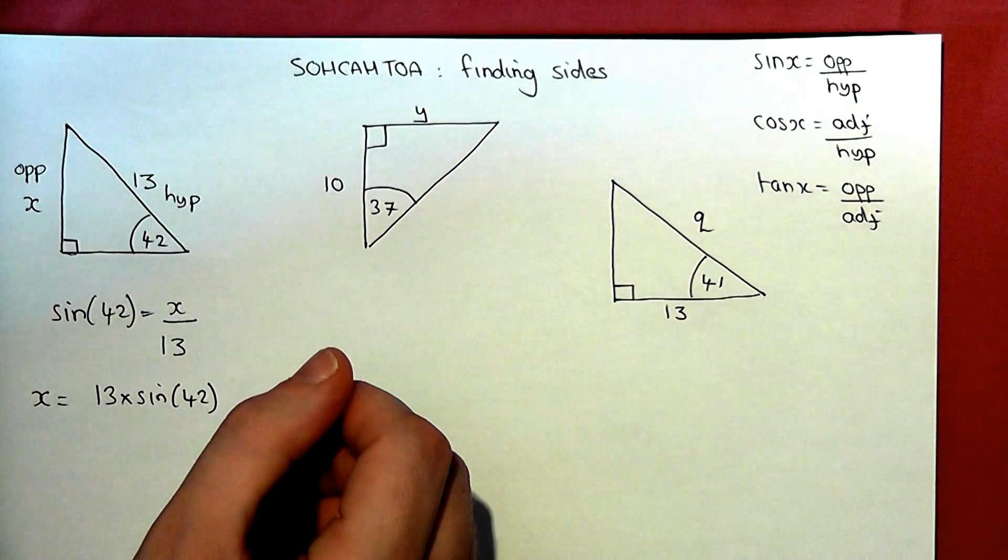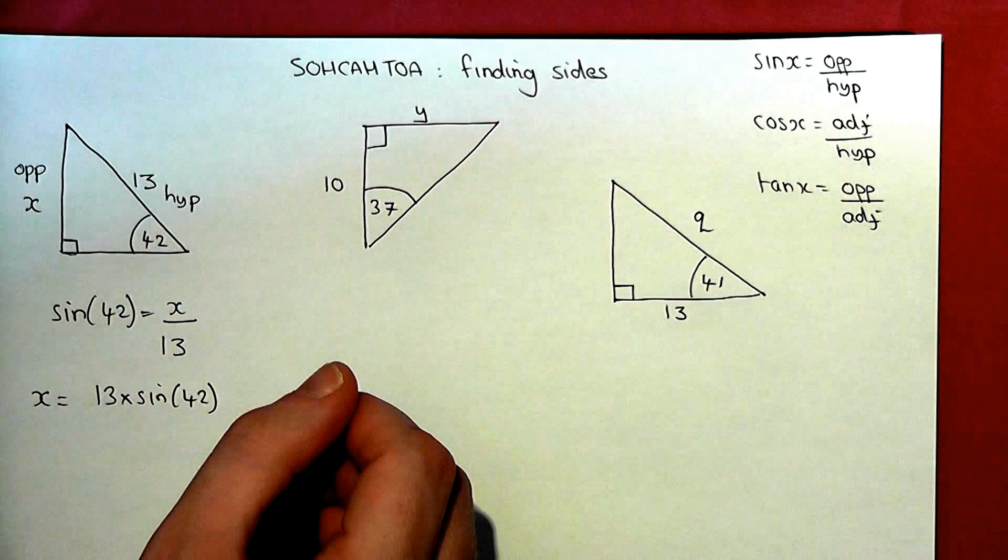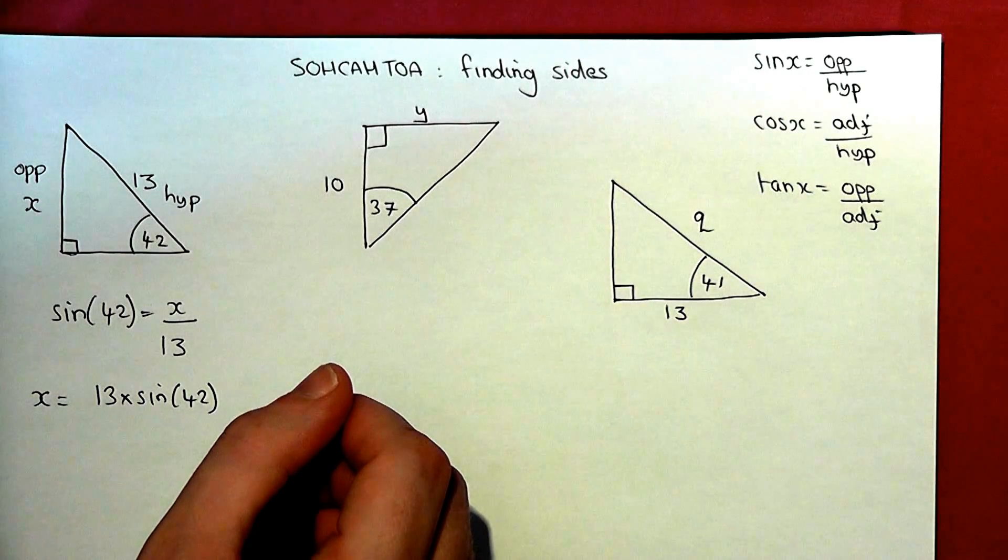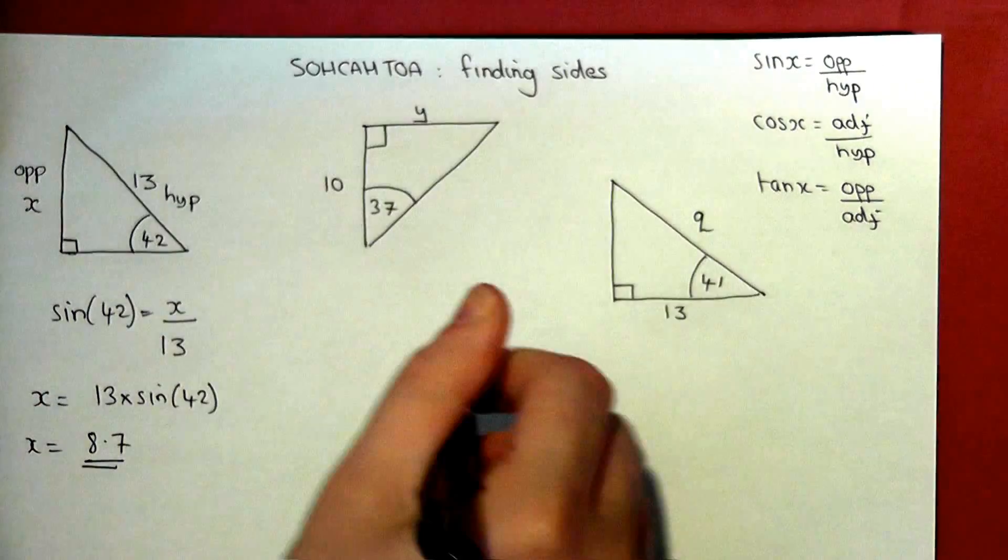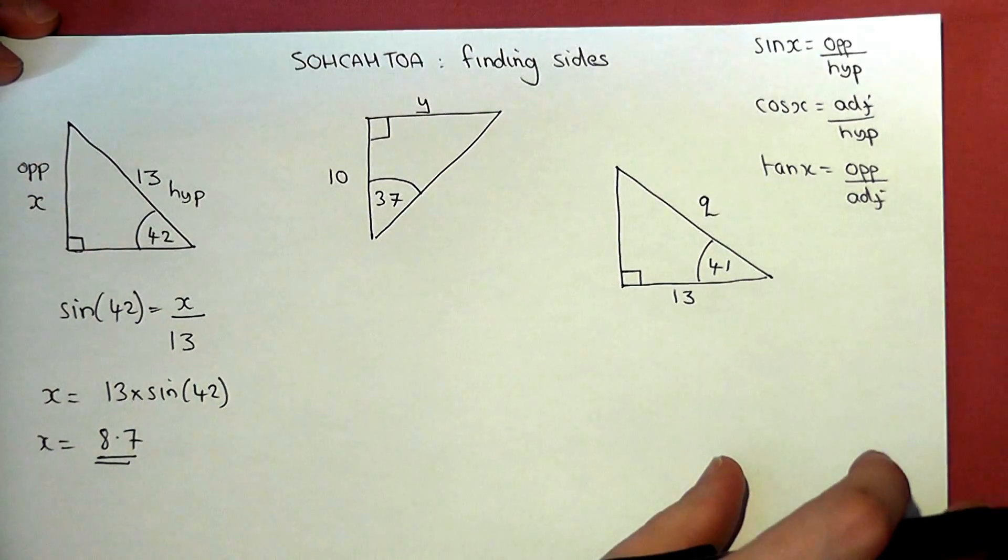So I input that into my calculator as I see it, 13 times sine of 42, and I get 8.7. So x has a length of 8.7.